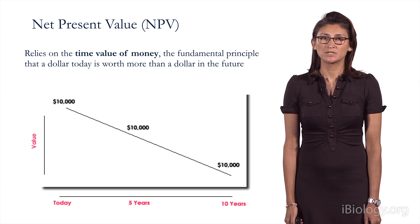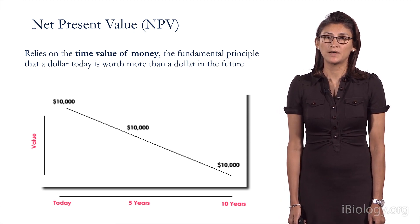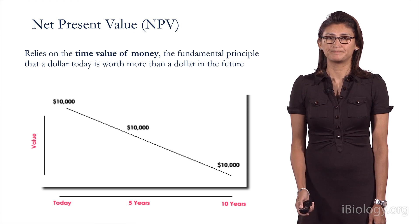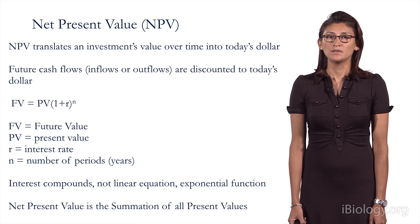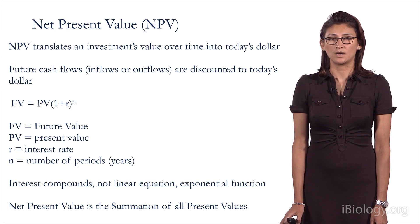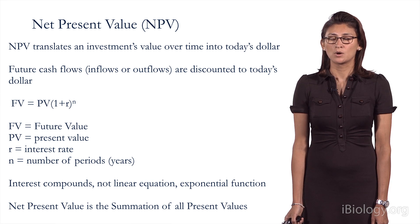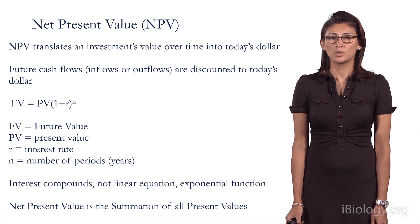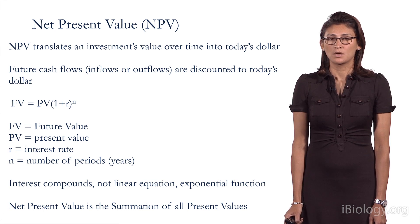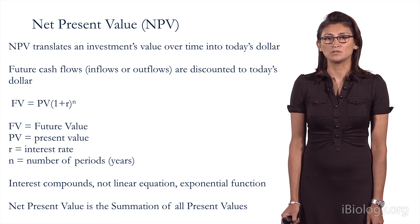NPV is the net present value. This concept relies on the time value of money — the fundamental principle in finance that a dollar today is worth more than a dollar in the future. The NPV translates investments of value over time into today's dollars. The equation is: future value equals present value times (1 plus the interest rate) to the nth power, where n is the number of periods, usually years. Importantly, the interest compounds on an annual basis, making this an exponential function, not a linear one. The net present value is simply the summation of all the present values.